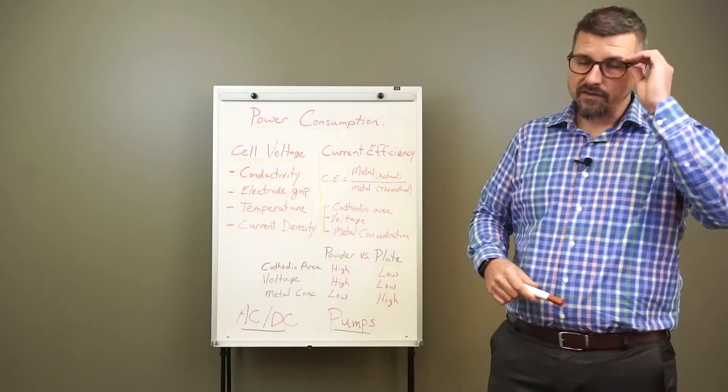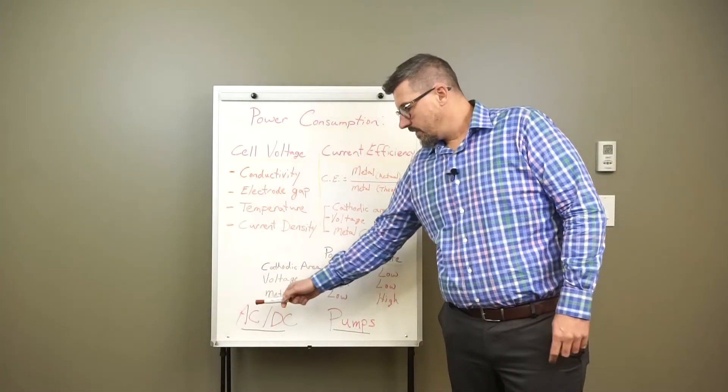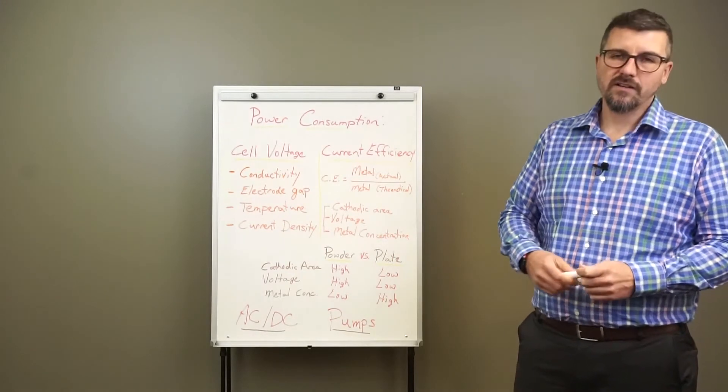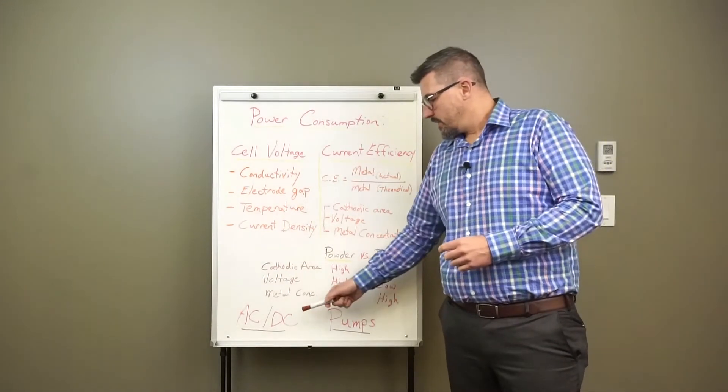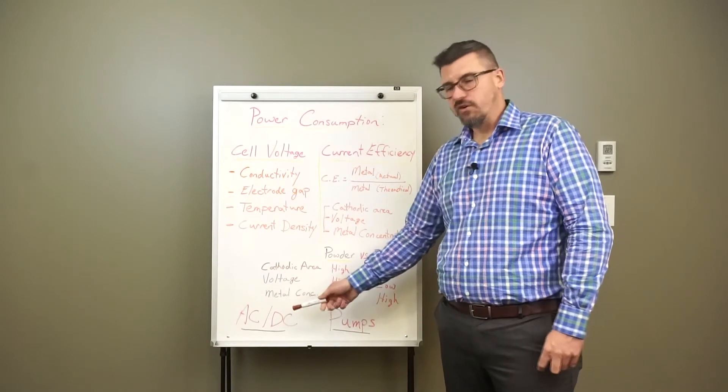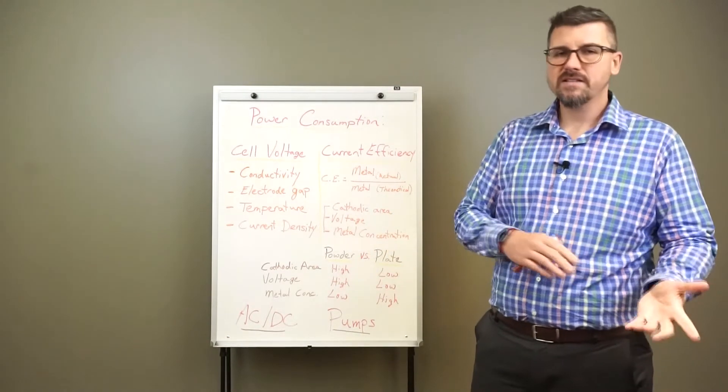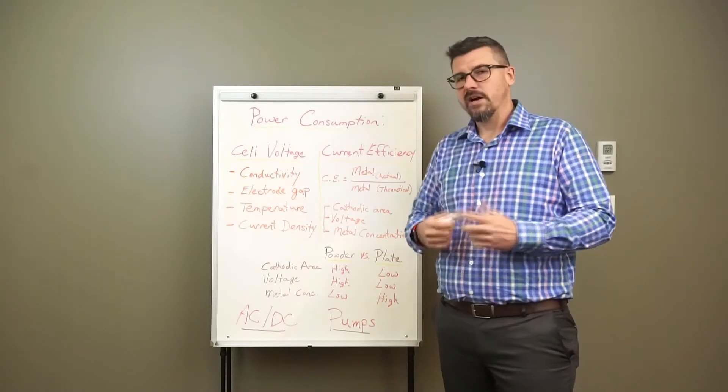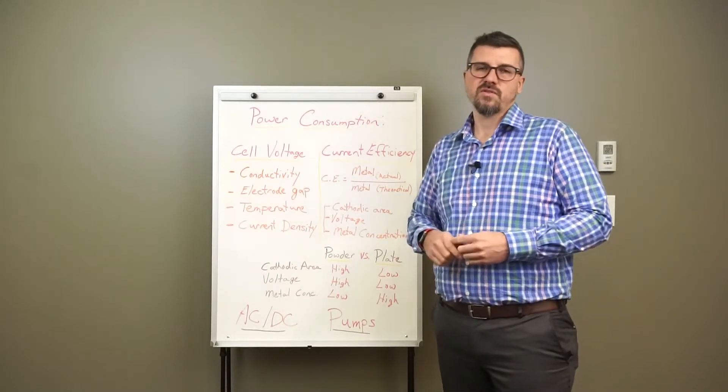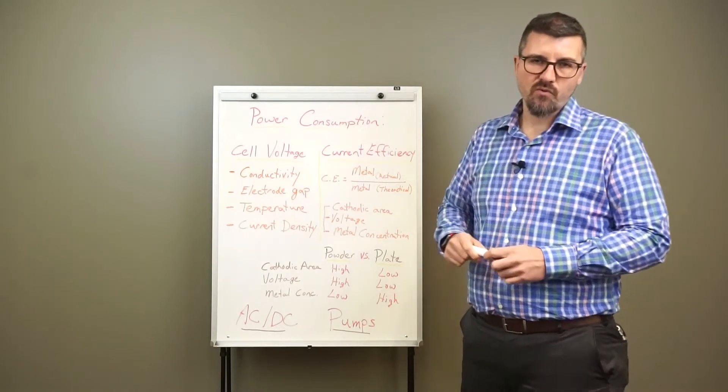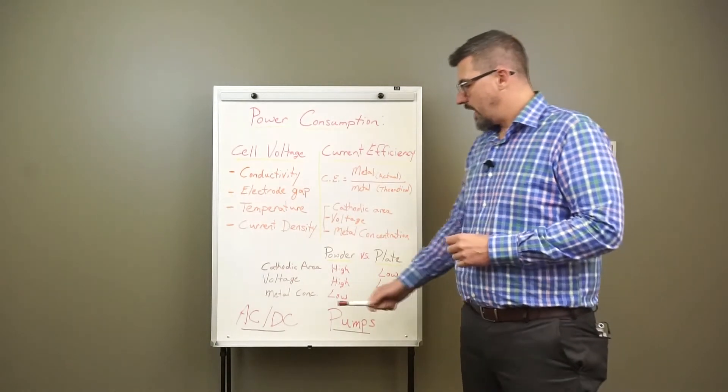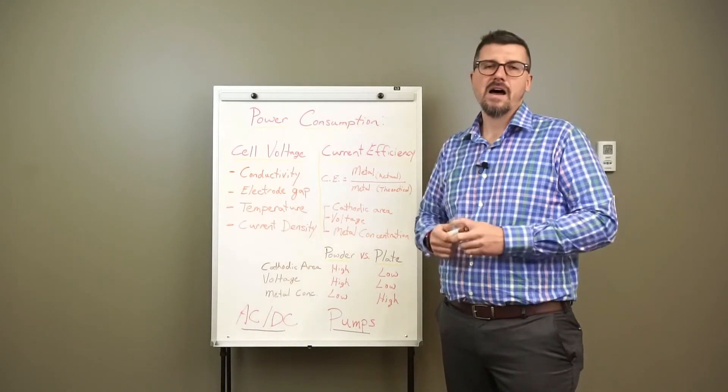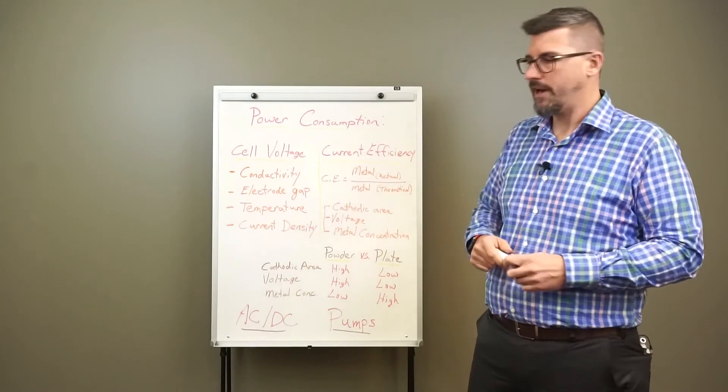Another factor that's important to consider is you need to supply AC current, or alternating current, to the rectifier. The cells operate with DC current, so the conversion from AC to DC current is not 100% efficient. Now at ElectroMetals, all of our systems are supplied with high efficiency switch mode rectifiers to ensure that that conversion efficiency is high, even at over a full range of turndown.